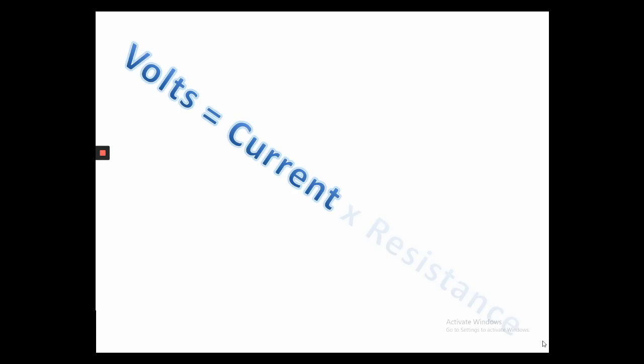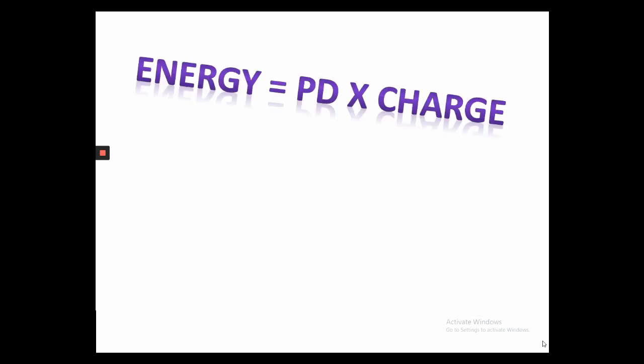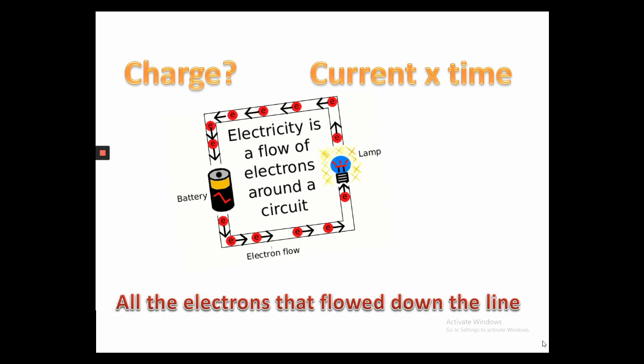Volts is current times resistance. You must learn this well, it's my insistence. Energy is PD times charge. Coulombs and volts equals joules that are large. Charge - it's current times time. It's all the electrons that flow down the line.